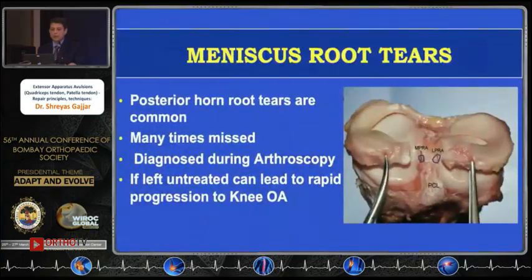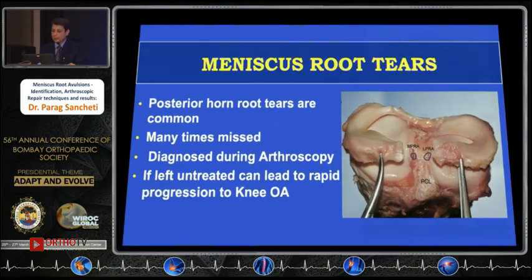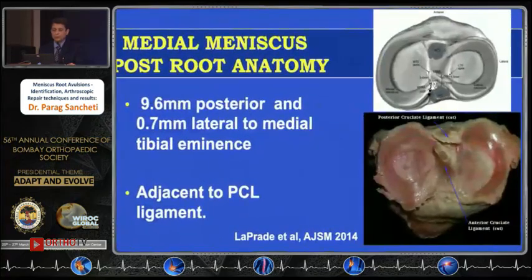We all know that the posterior horn root tears are more common than the anterior. They are many times missed preoperatively and we just realize that there is a root tear during an arthroscopy, and if these are untreated then we all know it can lead to osteoarthritis.